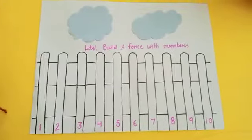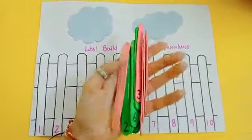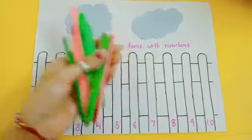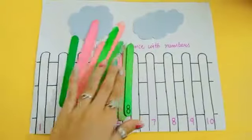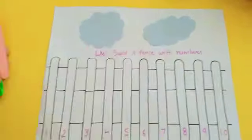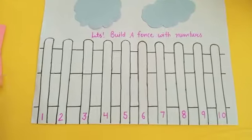Now kids look here. Do you know what I have? I have some ice cream sticks. And kids I have written 1 to 10 numbers on these ice cream sticks. Now let's make a fencing with these numbers.